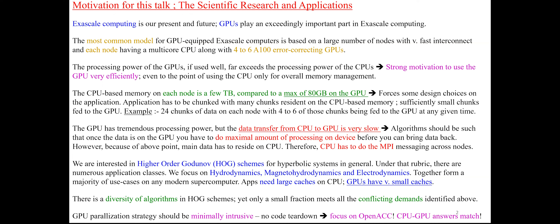GPUs do come with some limitations. The maximum memory on a typical GPU is about 80 gigabytes, whereas on the node you'll have something like two or three terabytes of memory.